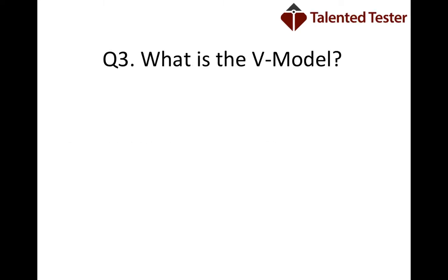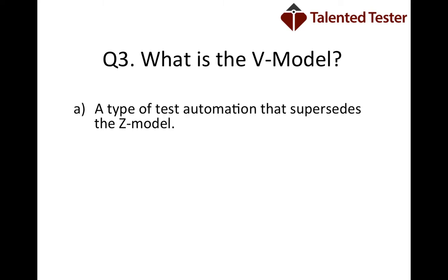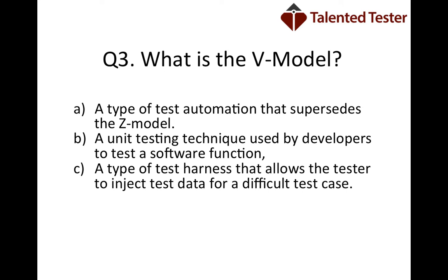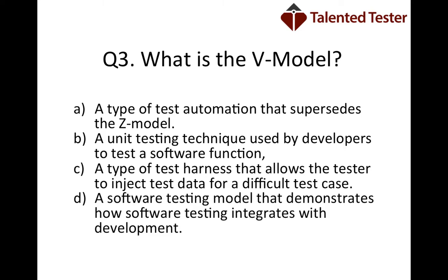To begin with, we're going to look at question three, which is taken from sample paper number two. What is the V model? Is it A, a type of test automation that supersedes the Z model? B, a unit testing technique used by developers to test software function? C, a type of test harness that allows the tester to inject test data for a difficult test case? Or D, a software testing model that demonstrates how software testing integrates with development? I'll give you a couple of seconds to think about what you believe to be the right answer.